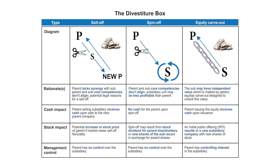With a sell-off, we're thinking there's no potential. It's underperforming — let's just get rid of it. We want nothing more to do with it. We just want to focus in on the core. And remember, by selling it off, it's going to generate cash. So an outright sale of that subsidiary — we want to focus in on our core, lack of synergy, and we want to get some cash.